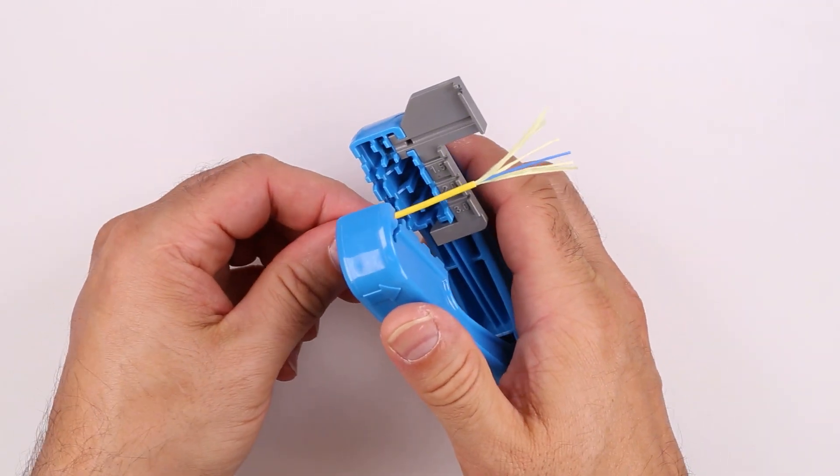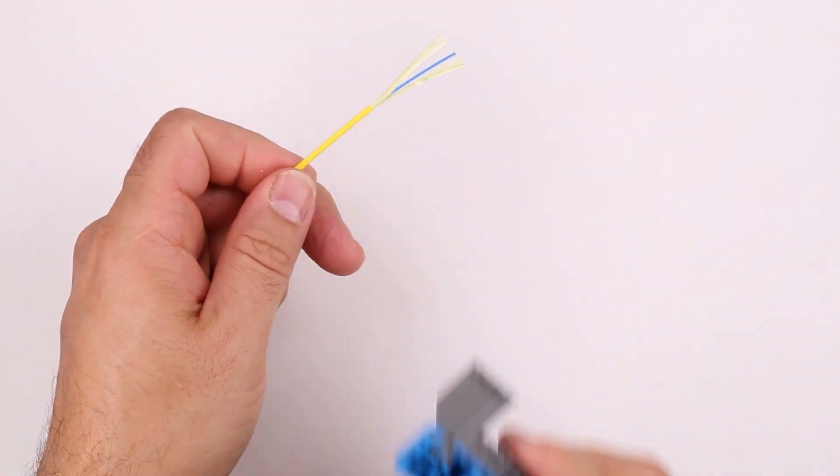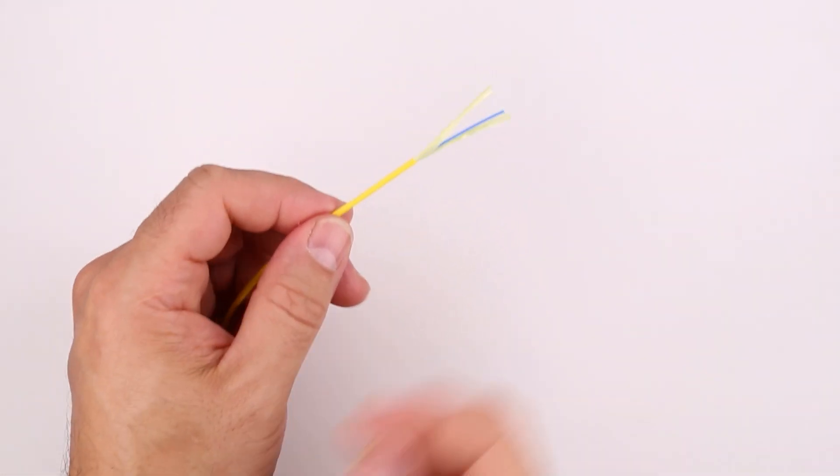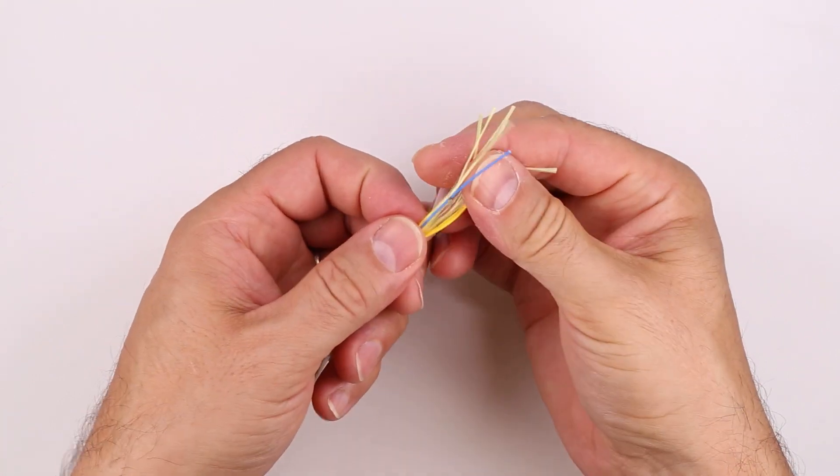Place the cable in the appropriate slot for the cable size with the end of the jacket against the stop. Squeeze the tool and pull the cable through the tool to slit the jacket. Pull the aramid out one side of the jacket slit.